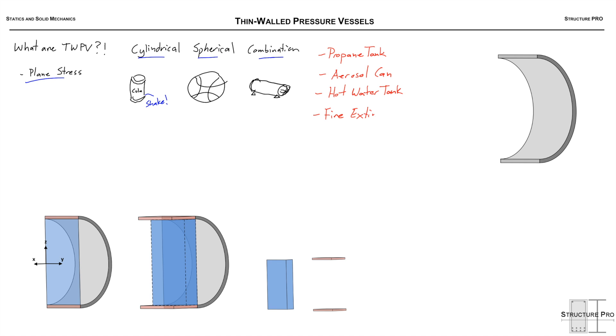How thin do we need these to be to be considered thin-walled pressure vessels? The guideline is we want an inside radius divided by thickness to be greater than 10, and this will ensure that we have less than 5% error.